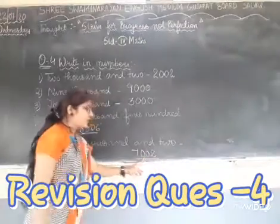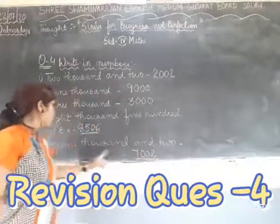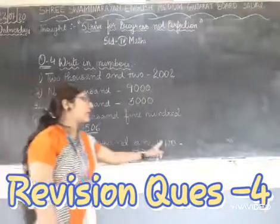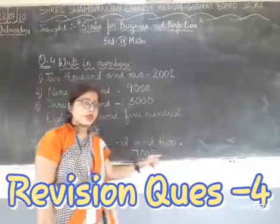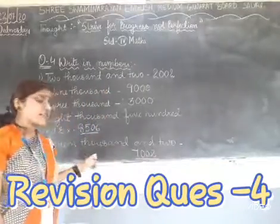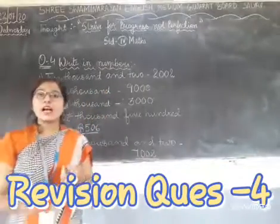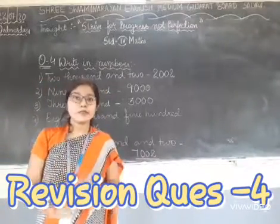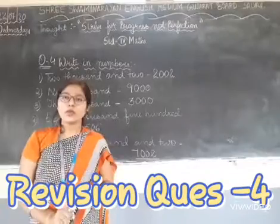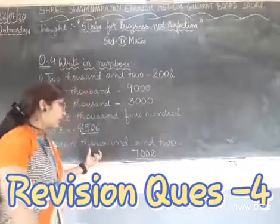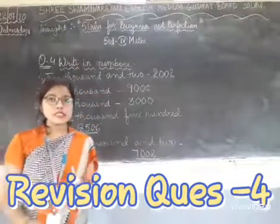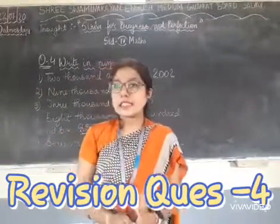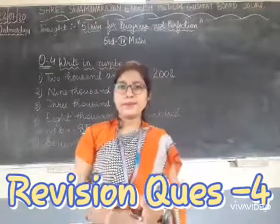Why are we putting 0? Because you see 7,000 and directly 2 is given. In the place value, 100 is not there and 10 is not there. So wherever that place value is missing, you have to put 0 over there.